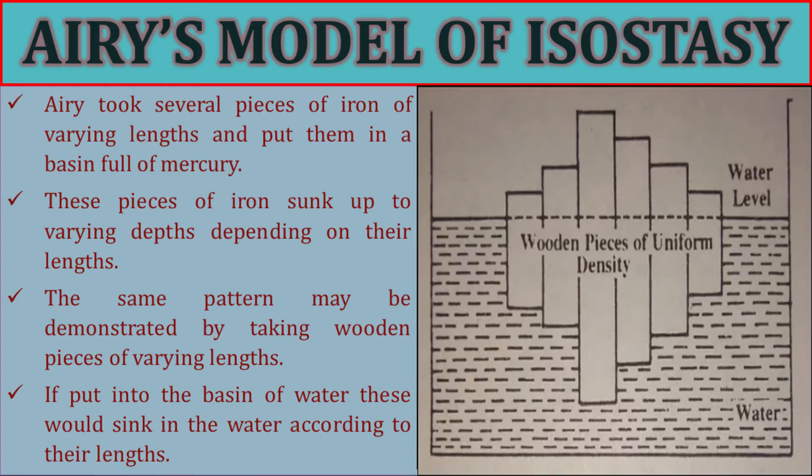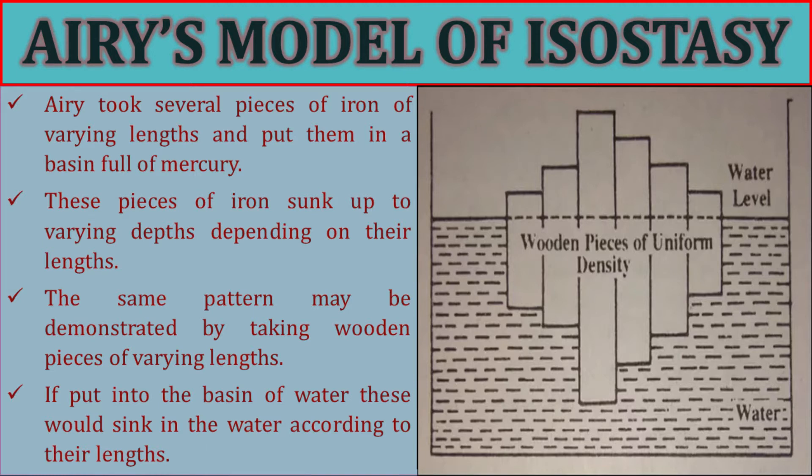The first model is George Airy's model. According to Airy, the density of the crust is the same throughout the Earth — whenever moving from one place to another, the density of the crustal material is constant. However, the crust is not uniform in depth. Airy's hypothesis suggests that the thicker parts of the crust sink down into the mantle while the thinner parts float on it. The crust is described as an ice-like shape floating on the mantle, which, although liquid, is denser than the crust. According to Airy, continents are made up of rocks having different uniform density but their thickness varies from place to place.